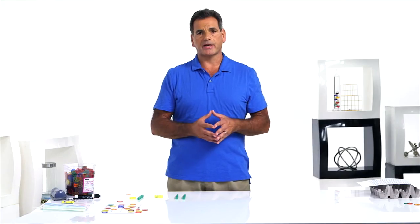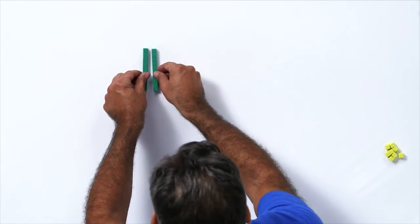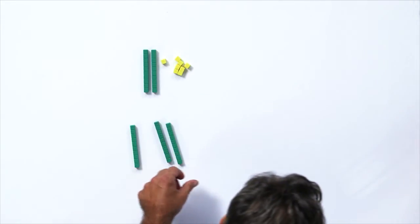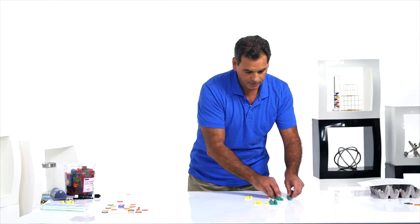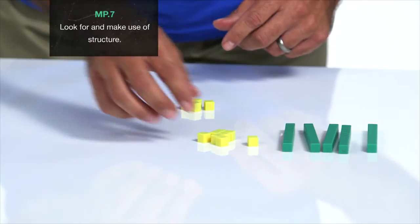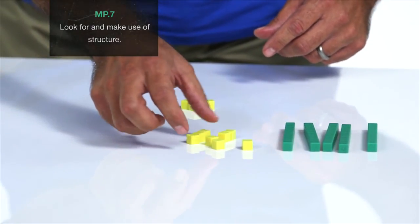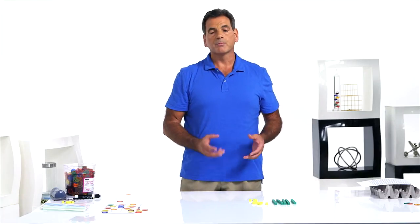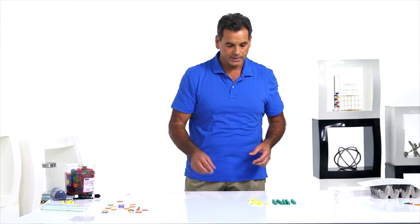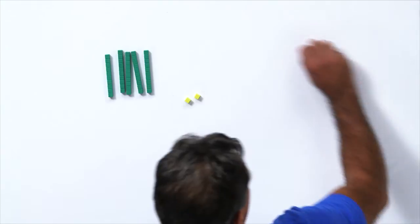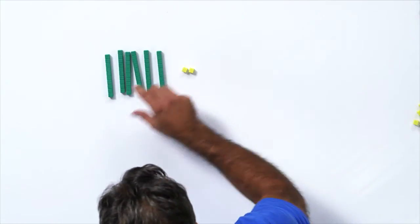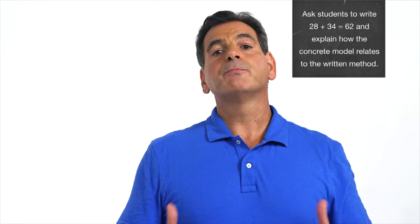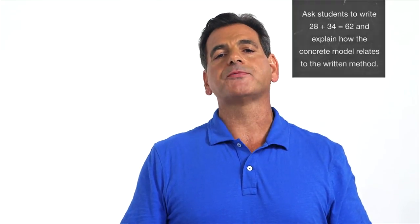Let's look at one where we have to re-bundle using base 10 blocks. Let's look at 28, 10, 20, 8 plus 34. 10, 20, 30, 4. Let's put our tens together. 10, 20, 30, 40, 50. Good there. Let's put our ones together. 1, 2, 3, 4, 5, 6, 7, 8, 9, 10, 11, 12. Uh-oh. Too many ones in the ones place. But students know they can trade in 10 ones for a 10. So let's take 10 ones and trade it in for a 10. And our answer is 10, 20, 30, 40, 50, 60, 1, 2. 28 plus 34 is 62.